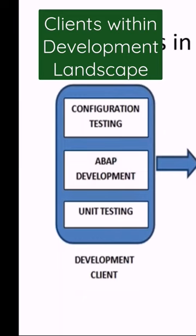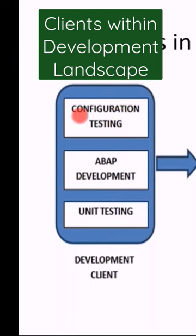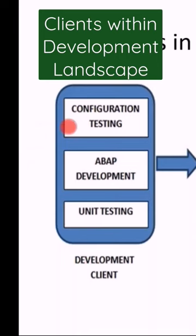We call it the golden client — only configuration will be done there. The second system will be for ABAP development, and another one for unit testing. If you make any configuration changes, you have to move them to unit testing using SCC1. As I explained in my video, you use SCC1 to move the transport request from one system to another. We have a three-system configuration: configuration is separate, ABAP development is separate, and unit testing is separate.